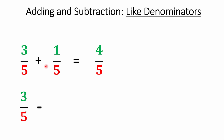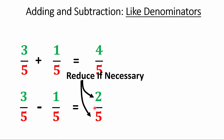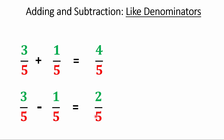Here's another one: three-fifths subtracted by one-fifth. Same idea — subtract the numerators and leave the denominator alone. Don't subtract the denominator. If you ever get zero as a denominator, you did something wrong. Zero is not allowed in a denominator — you can put it in the numerator, but not the denominator. It's forbidden territory. So don't subtract the denominators and get zero — that is wrong.